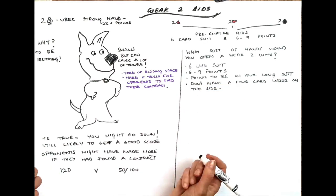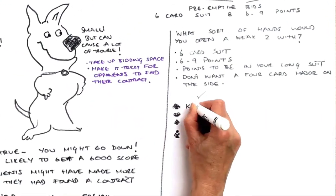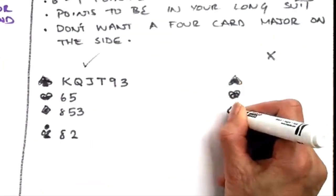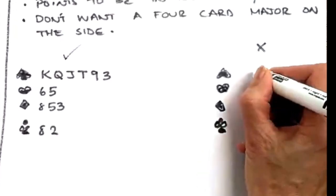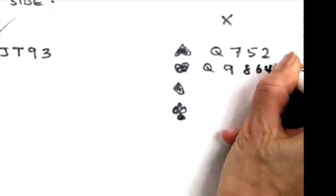So this is a good hand for doing a preemptive bid. It's a weak hand with a lovely six card suit and the points are all in that six card suit. This hand with its shoddy trump suit and a four card suit on the side is not so good.